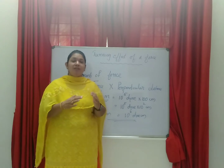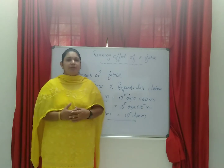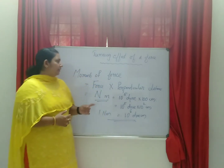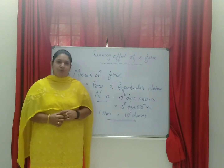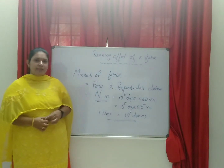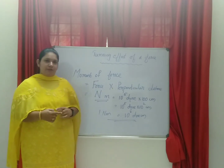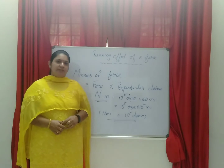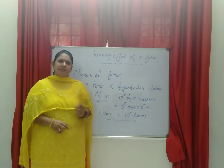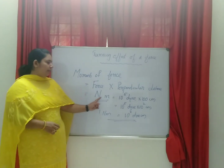Now all of you understand the applications of turning effect of force. Now we are going to study the SI unit. Since the moment of force is a physical quantity, it should have an SI unit. The formula for moment of force, or turning effect of force, is: moment of force = force × perpendicular distance. The SI unit of force is Newton, and the SI unit of length is meter. So the SI unit of turning effect of force is Newton meter.